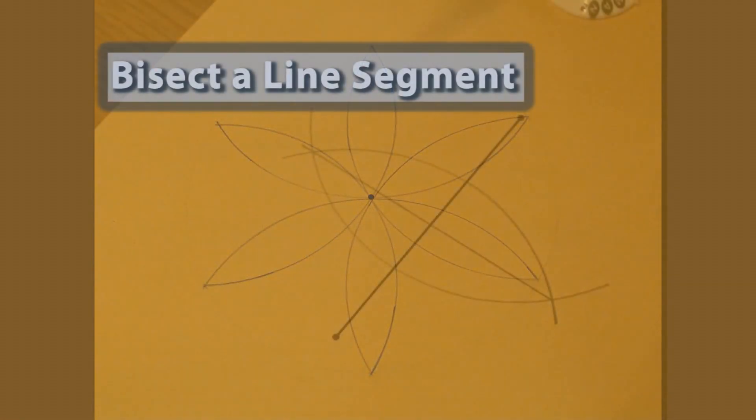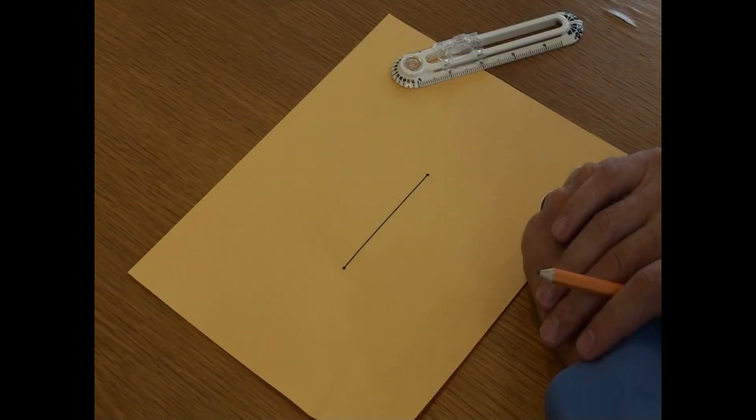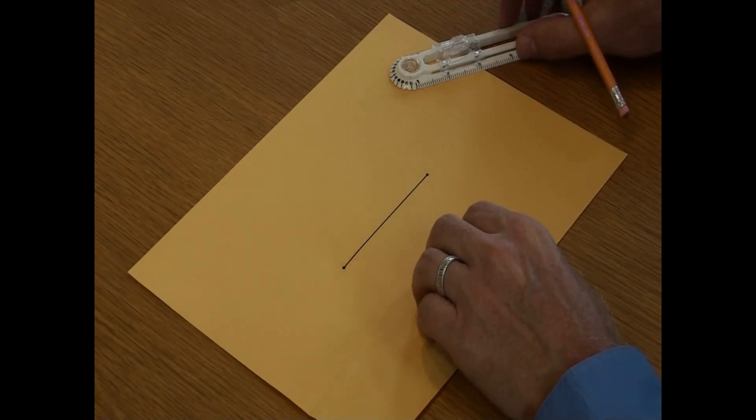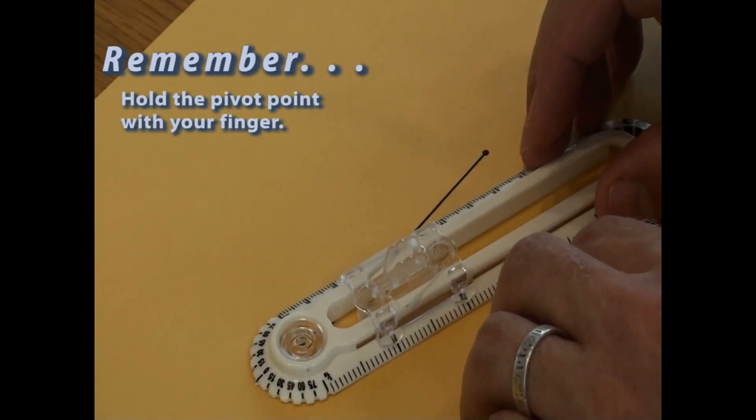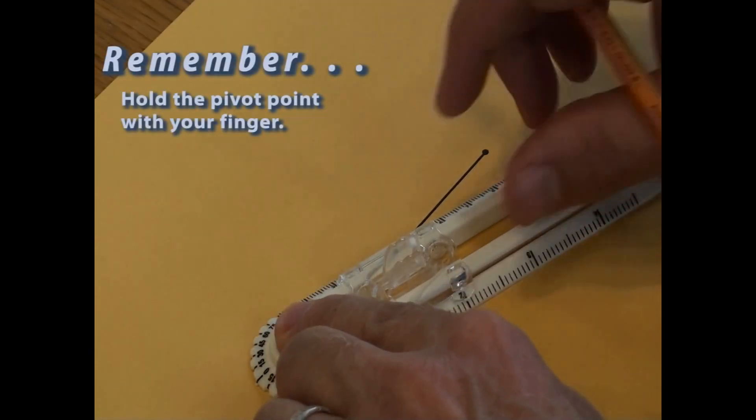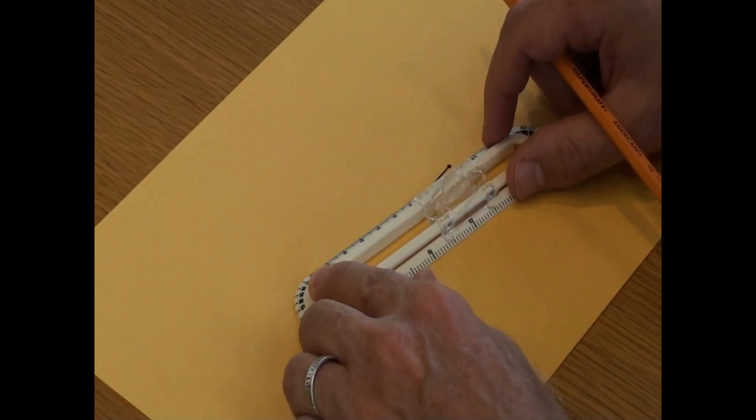You can use a ruler-based compass to bisect a line segment. I will demonstrate how to draw arcs from both endpoints and find the bisector. First, place the compass's pivot point on one endpoint. Move the compass's slide well beyond the line segment's midpoint.